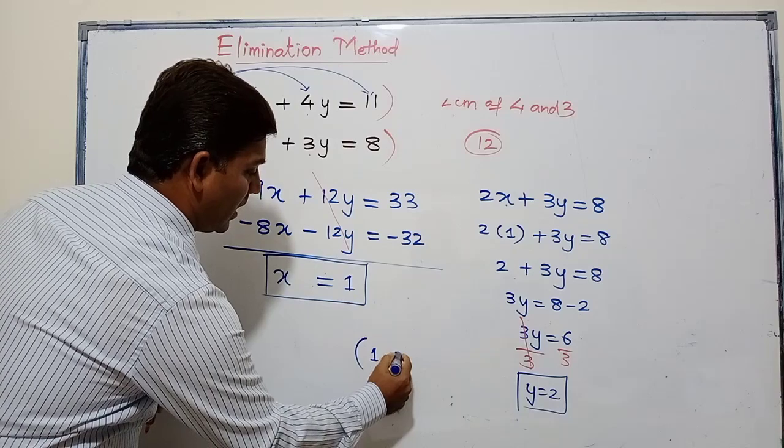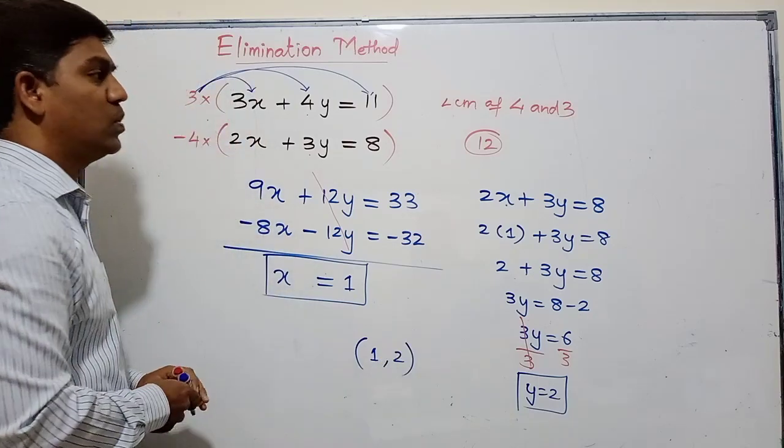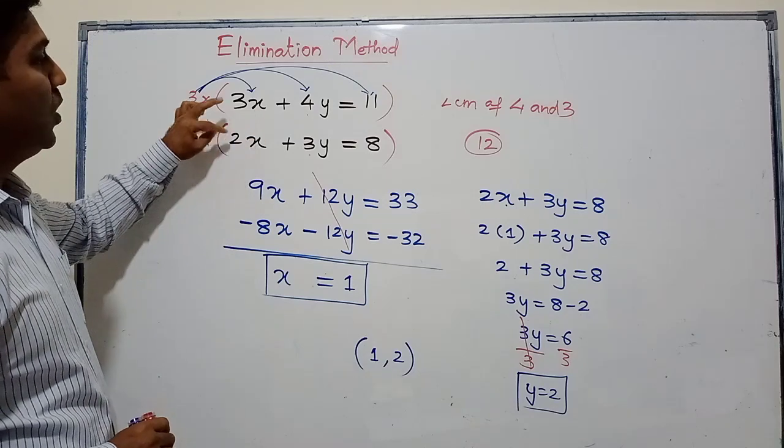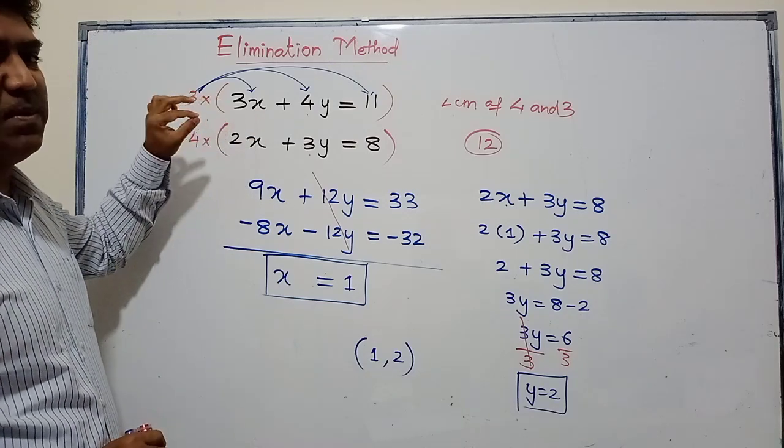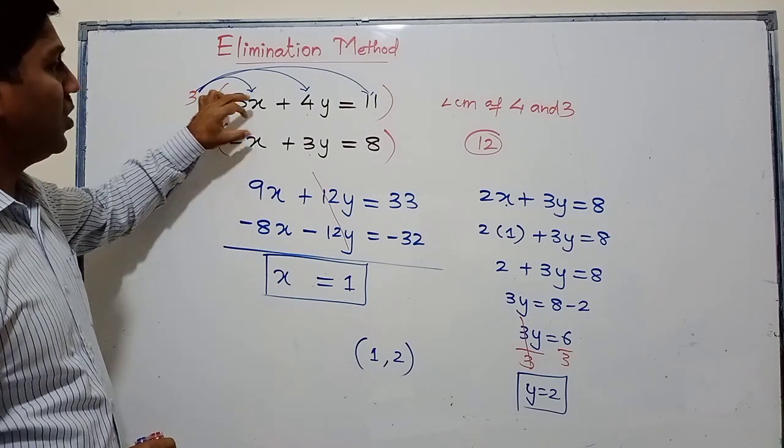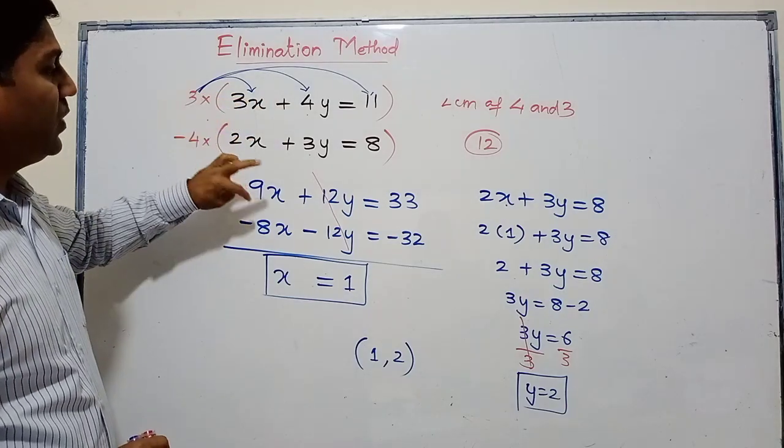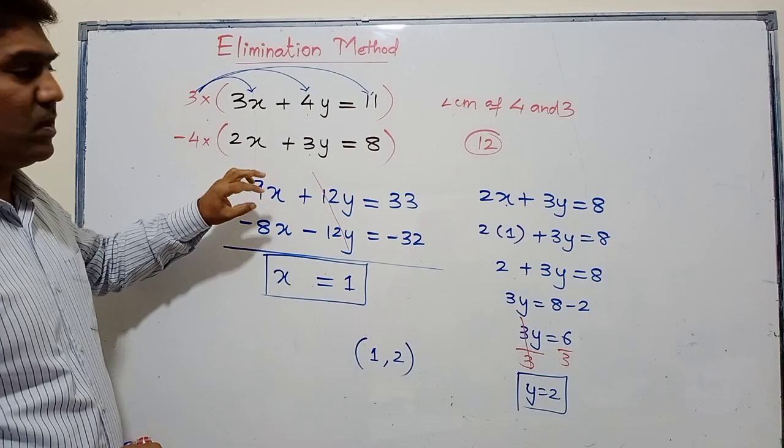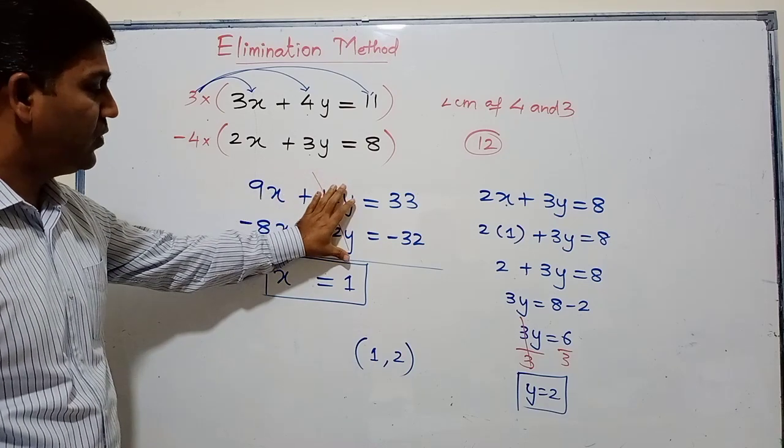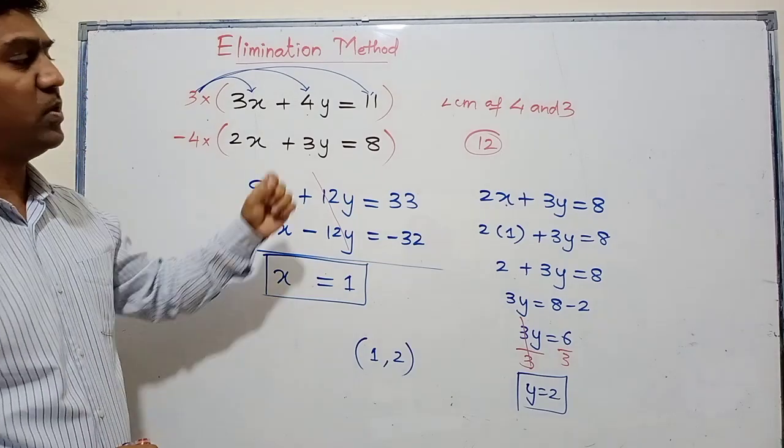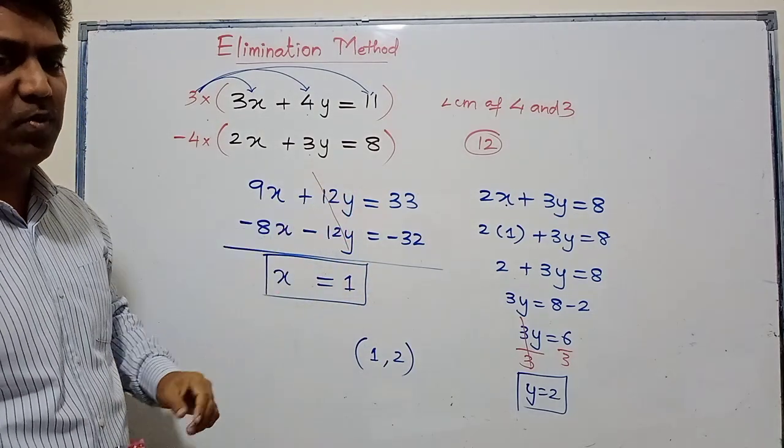We write it as a coordinate pair: the value of x is 1 and the value of y is 2. So in this particular method, we try to get one of the coefficients the same - either the x coefficient or the y coefficient. To eliminate, we need to have opposites. Add them, eliminate one variable, you're left with only one variable. You get the value of x, substitute in the second equation, and you find the value of y.